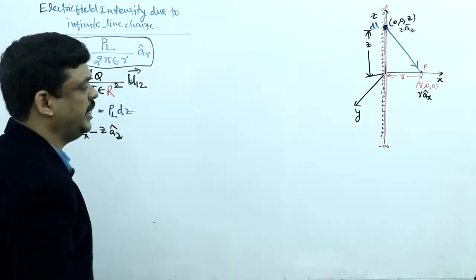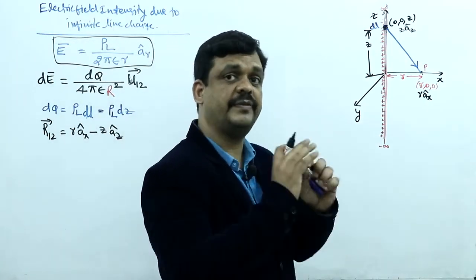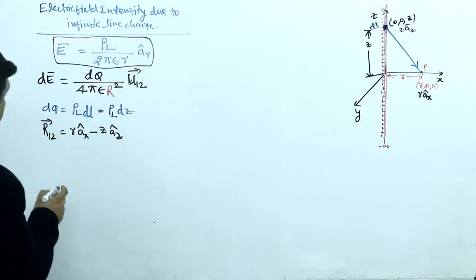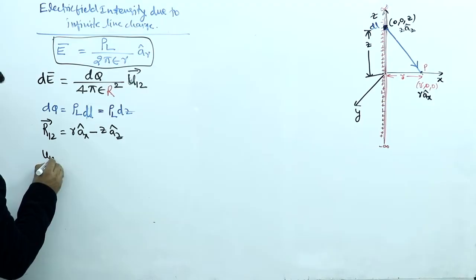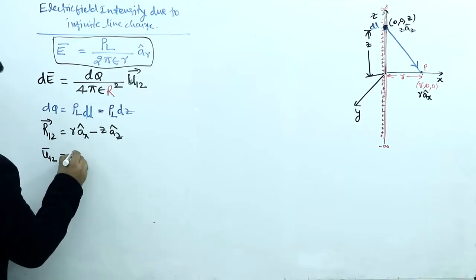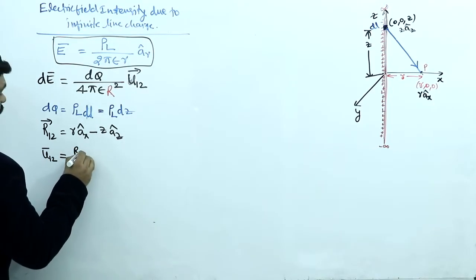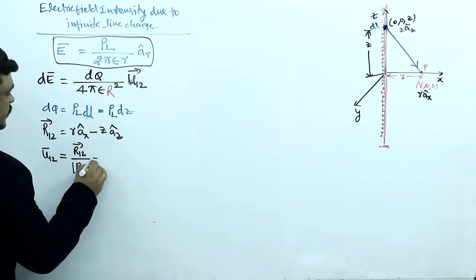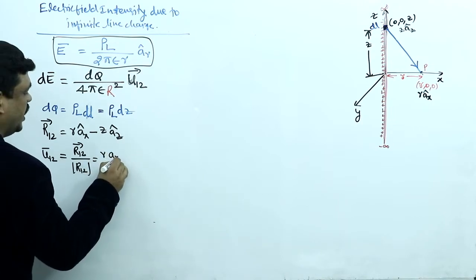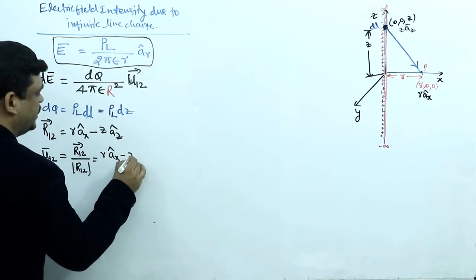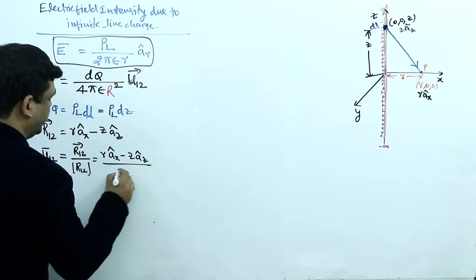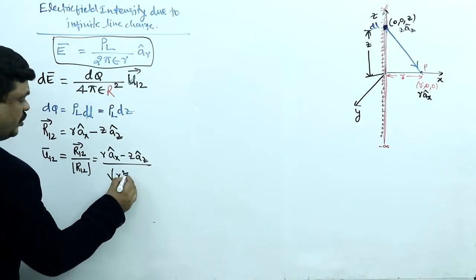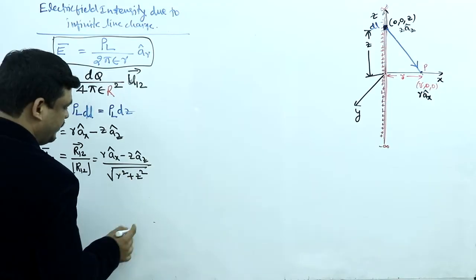The distance vector is now found. The unit vector is the distance vector divided by its magnitude. So the unit vector = (r·ax − z·az) / √(r² + z²). The magnitude r in Coulomb's law also equals √(r² + z²).